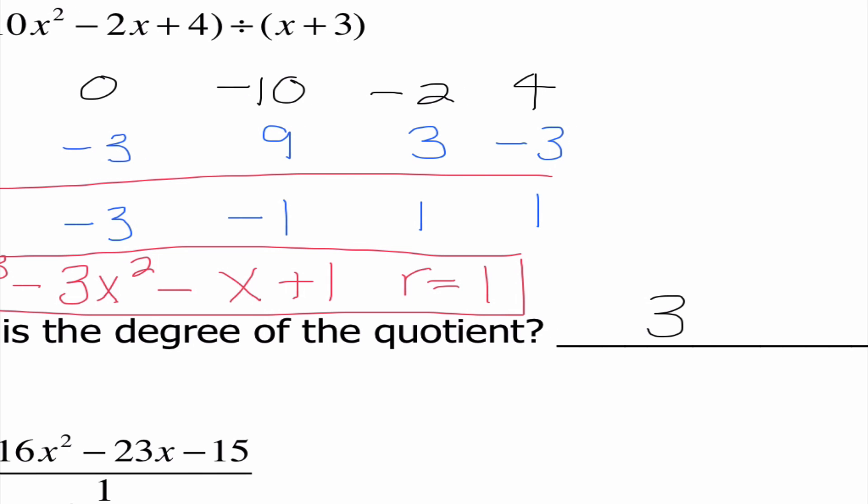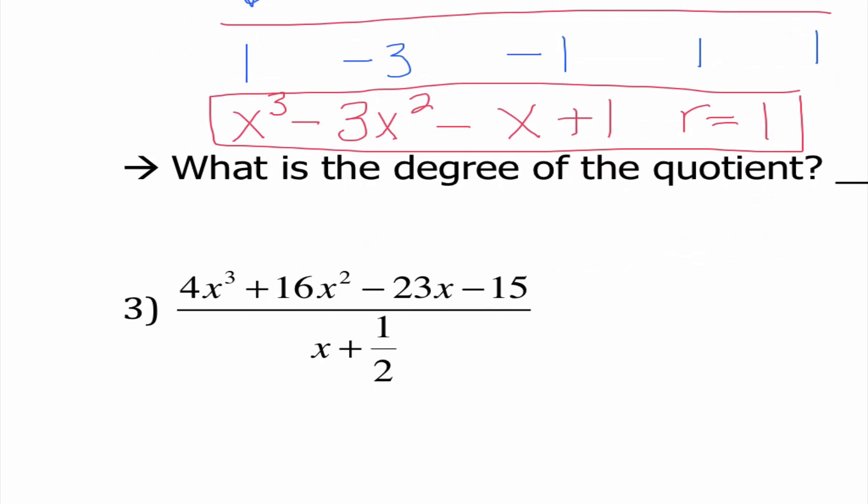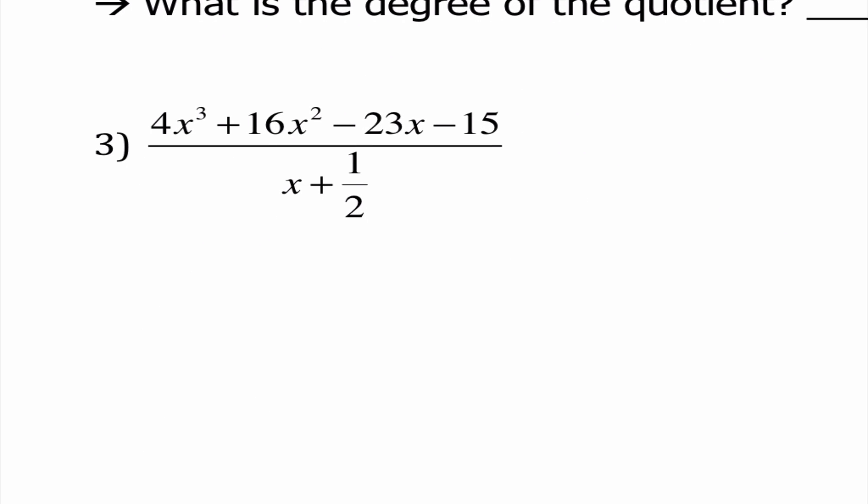Last but not least here, we have 4x cubed plus 16x squared minus 23x minus 15 over x plus 1 half. So I'm going to go ahead and say negative 1 half is my box number because that's what I get when I set this equal to 0. My coefficients are 4, 16, negative 23, and negative 15. Notice that those were in descending order and I wasn't missing anything. So that's why I can go ahead and go straight into writing those.